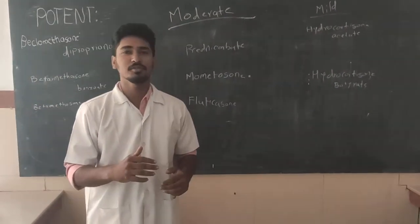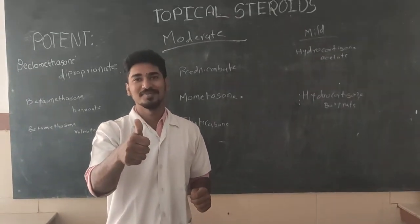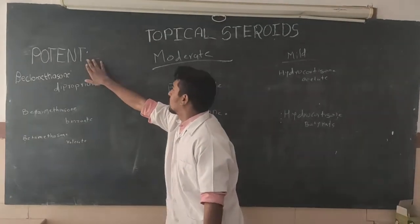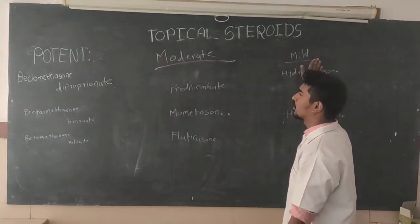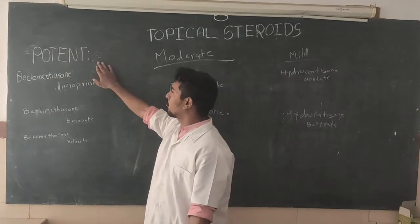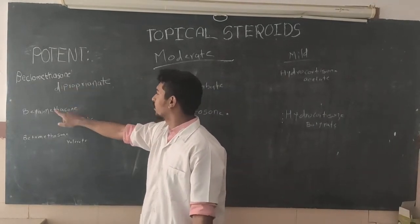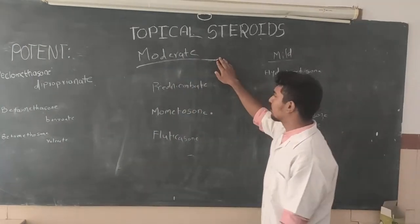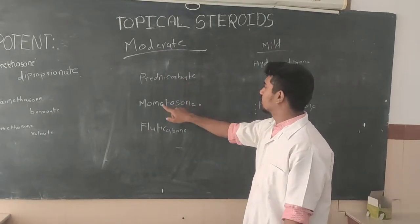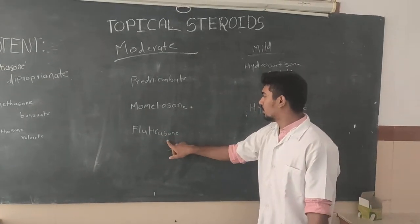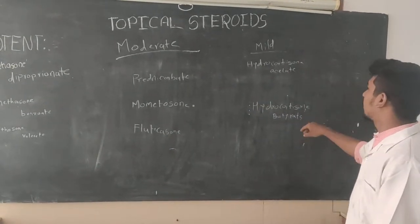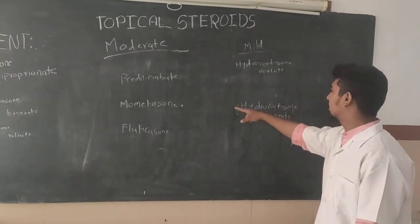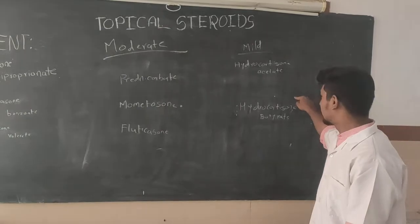Examples include hydrocortisone and others. Topical steroids are classified into three groups based on potency: potent, moderate, and mild. The potent ones are beclomethasone dipropionate, betamethasone benzoate, and betamethasone valerate. Moderate ones are prednicarbate, mometasone, and fluticasone. The mild ones are hydrocortisone acetate and hydrocortisone butyrate. Fluorinated and lipid-soluble compounds are more potent.